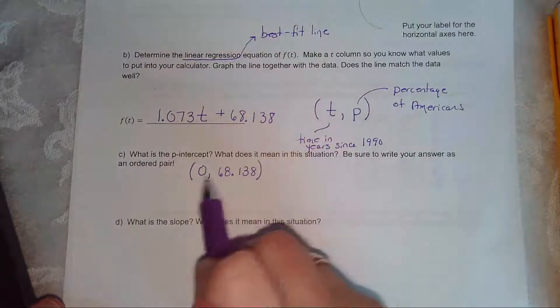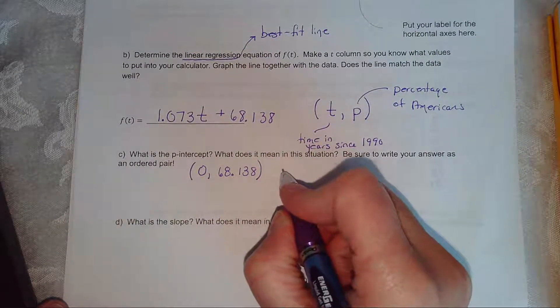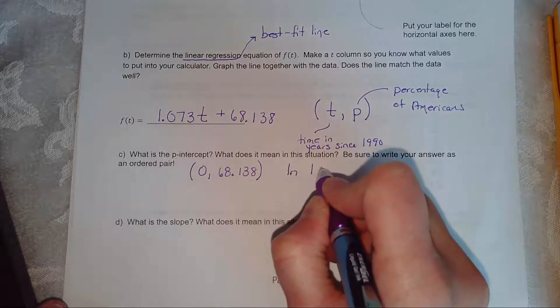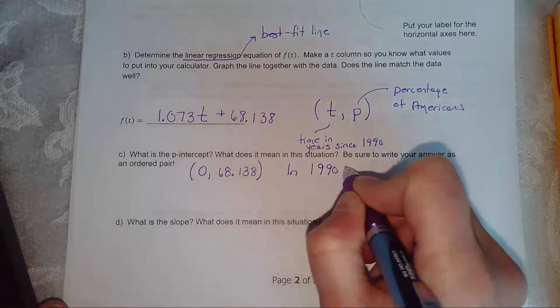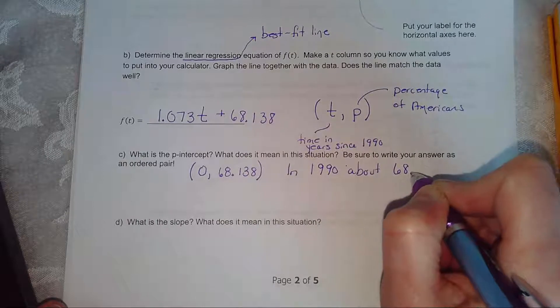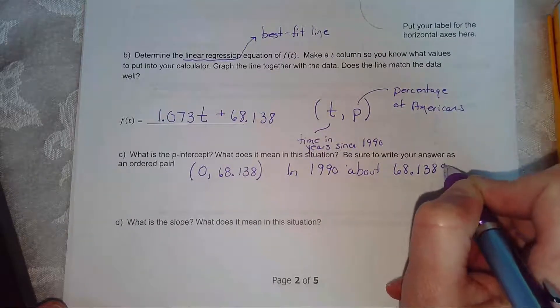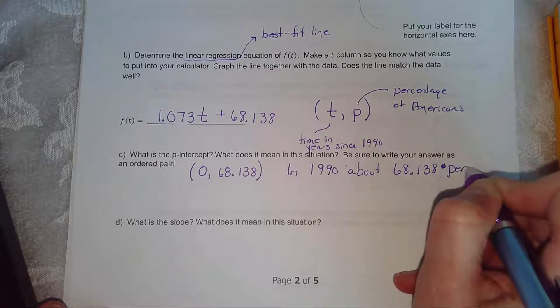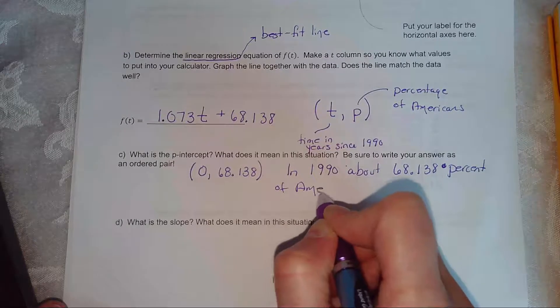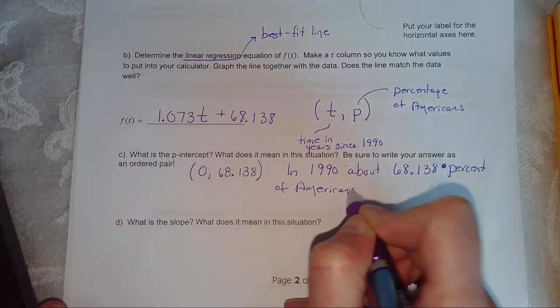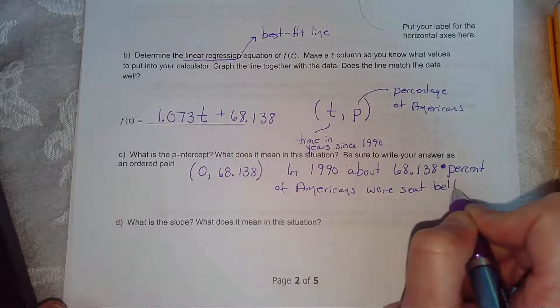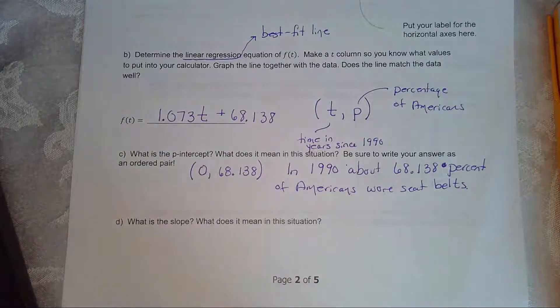So it says, what does this mean in the situation? Well, if t is zero, zero years have gone by since 1990. So in 1990, about 68.138 percent of Americans wear seat belts.